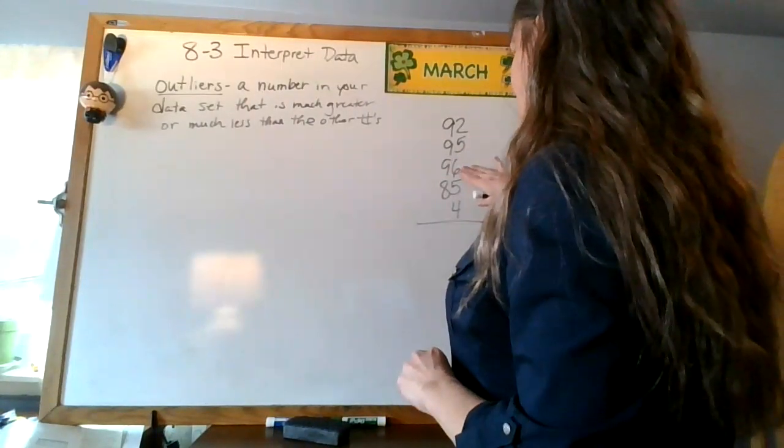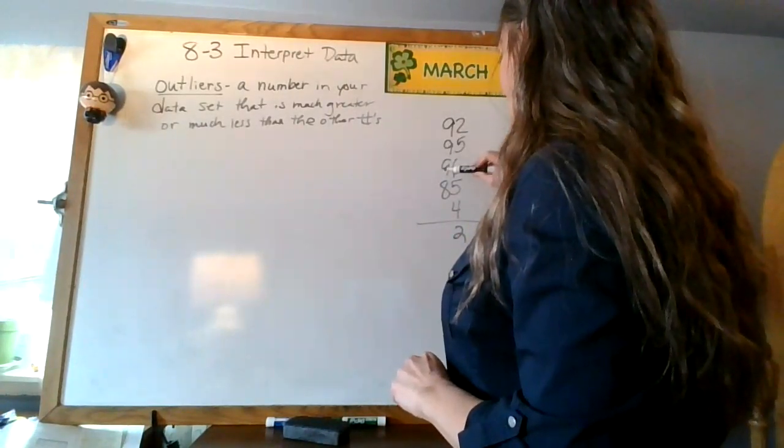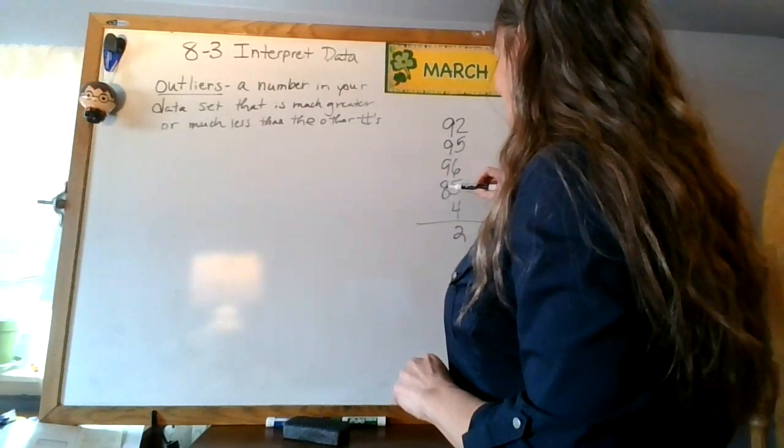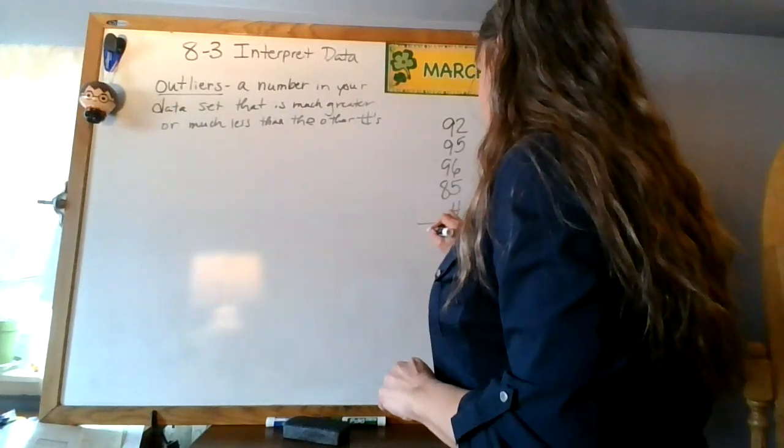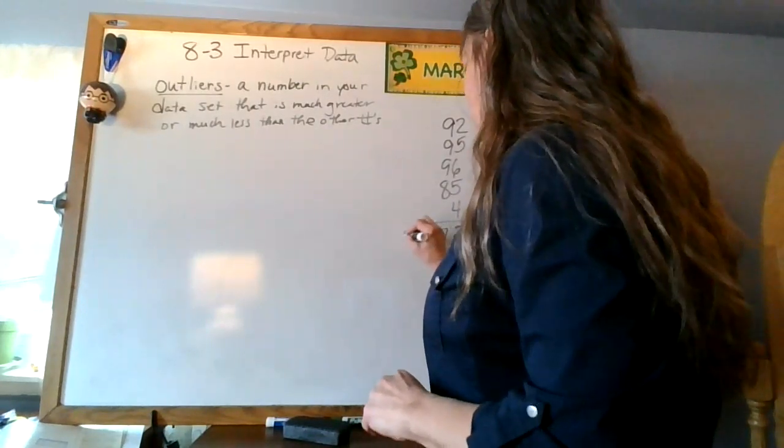7 and 6 is 13, and 9 would be 22. 22, that's 29, 37, 1, 2, 3, 4, I'm gonna divide that by 5.